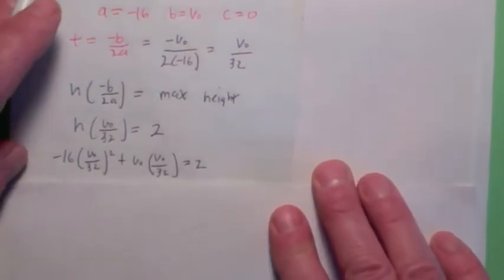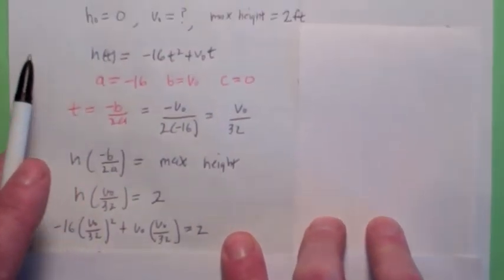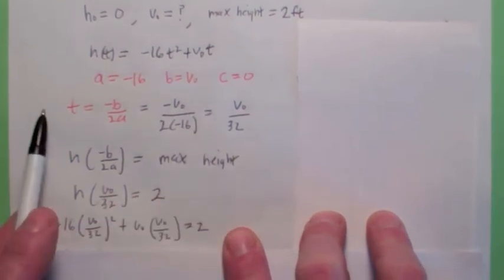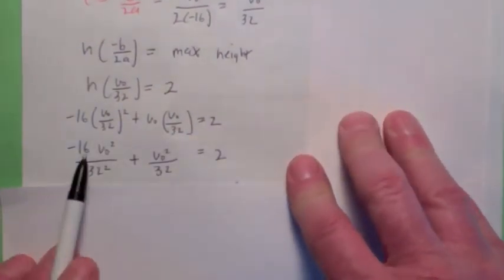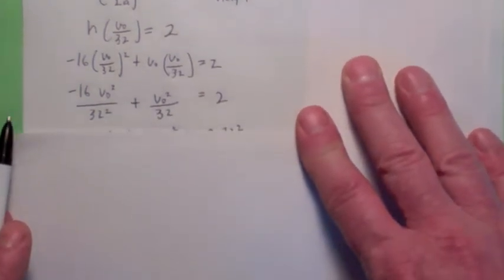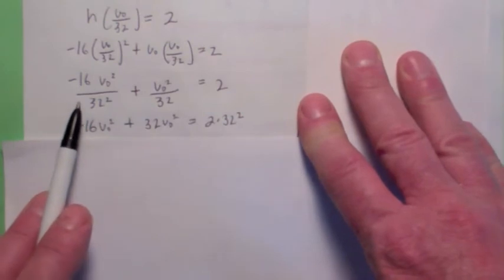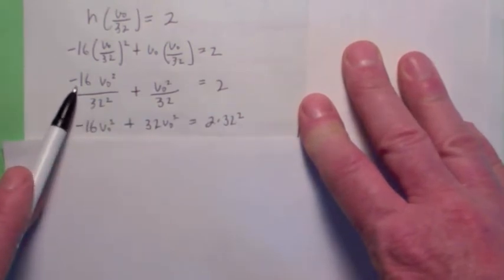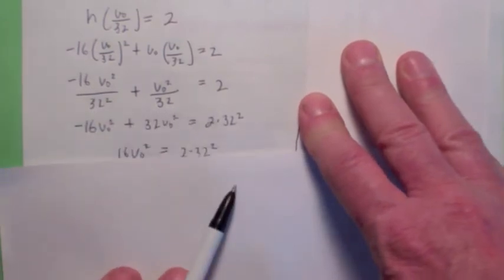Plug in. This is where it gets kind of messy. Plug this into the function. Remember, the function is right here. Plug in, wherever there's a t, plug in v₀ over 32. So you get this. And set it equal to 2. And you get this. Now I'm going to solve this equation by clearing the fractions. Multiply both sides by 32 squared. So this becomes negative 16v₀ squared. This becomes 32v₀ squared. And this becomes 2 times 32 squared.